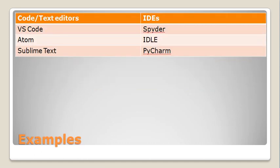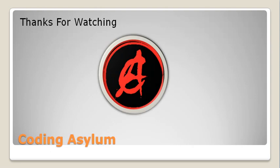Here you can see the examples of code or text editors: VS Code, Atom, Sublime Text, and many more. For IDEs, examples include Spyder, IDLE, and PyCharm. Thanks for watching this video — do give it a like and subscribe to my channel, Coding Asylum. We'll meet you next time.